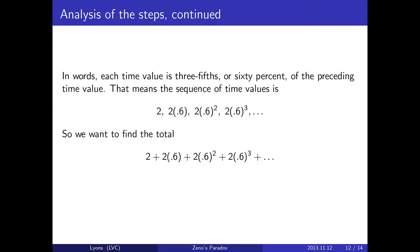So we want to find the total. 2 plus 2 times 0.6, plus 2 times 0.6 squared, plus 2 times 0.6 cubed. That's the total time that is required for the rabbit to catch the turtle.